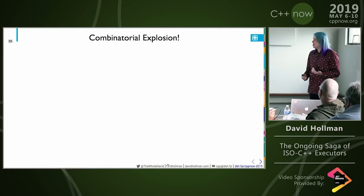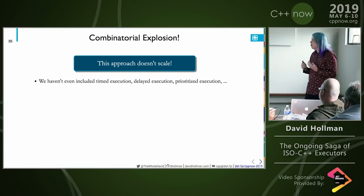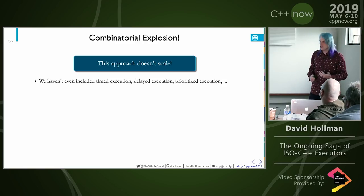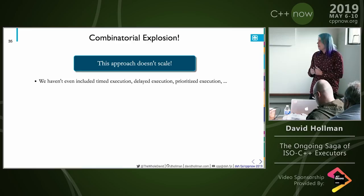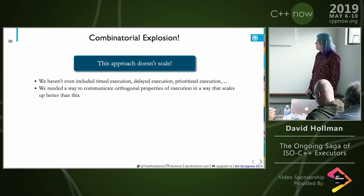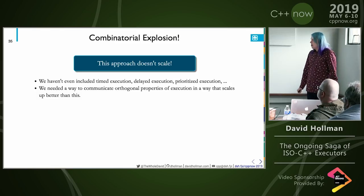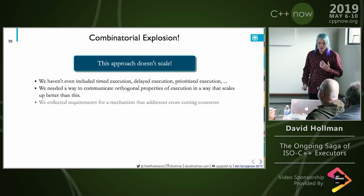You get a combinatorial explosion, and this approach really doesn't scale. We hadn't even included timed execution, delayed execution, or prioritized execution — all things that were fundamental concerns in early proposals that we knew we'd have to add eventually. We needed a way to communicate orthogonal properties of execution in a way that scales better than this.